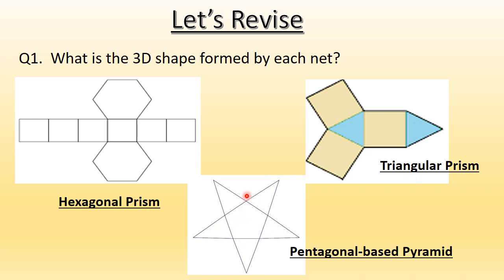Look at this — it seems like a star but it is basically the net of a shape. You can see there are many triangles. When you fold this net, the triangles raise up and meet at a point — so it is a pyramid. Check out its base: it has five sides, so it is a pentagon. Therefore this is a pentagonal based pyramid.